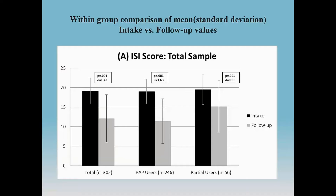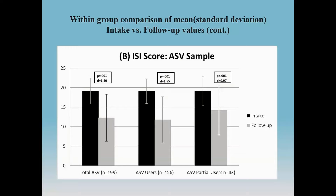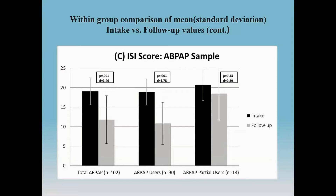The effect sizes are larger for the PAP users compared to the partial users, with a reduction in the Insomnia Severity Index dropping in the PAP users well below the cutoff of 15 for moderate insomnia, despite having started out close to 20 — just under the mark for severe insomnia. By device type, there is no meaningful difference; large effects are seen in both groups. The ASV users show a greater reduction than the partial users, which is statistically significant between groups, though this is a retrospective, non-randomized controlled study. The auto-bi-level device shows similar changes, though the partial user sample for that group is very small.